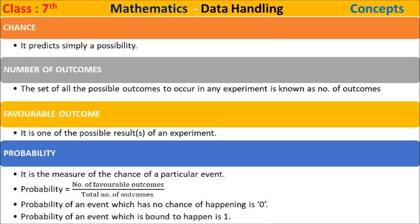A favorable outcome is one of the possible results of an experiment. Probability is the measure of the chance of a particular event. Probability equals the number of favorable outcomes divided by the total number of outcomes. The probability of an event which has no chance of happening is zero, and the probability of an event which is bound to happen is one.